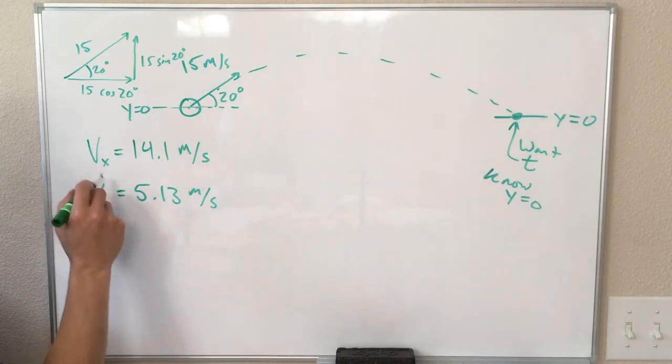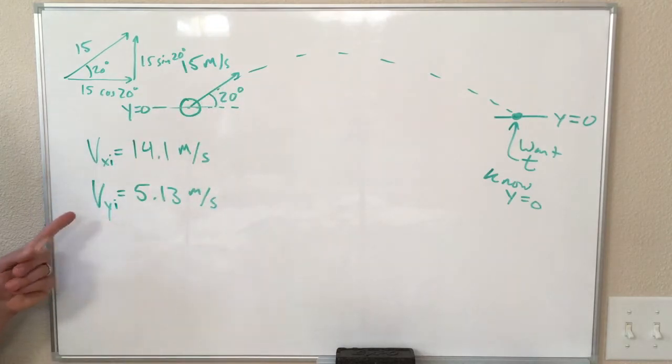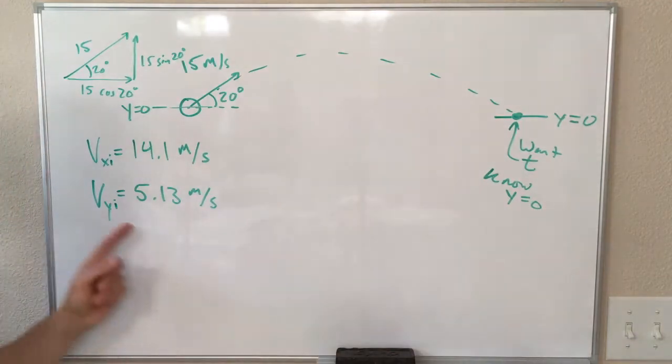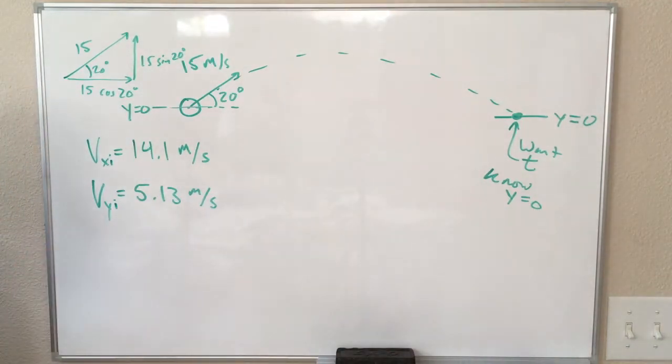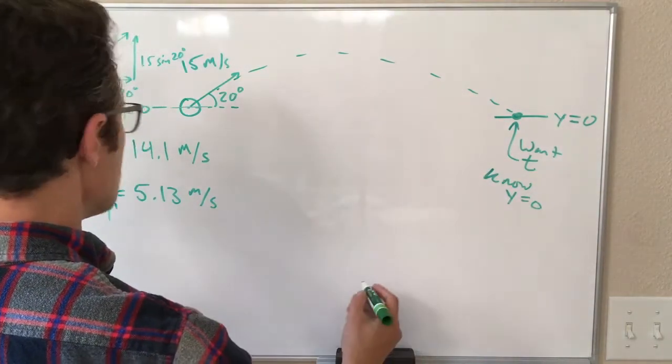So these both, because this is the initial velocity, these are both initial velocity components. And that's important, because Vy, the y velocity, is going to change as we move along here. So it is important to specify that as the initial y velocity. We might have a different final y velocity. So we want time. We think we need to use the y direction to get it.